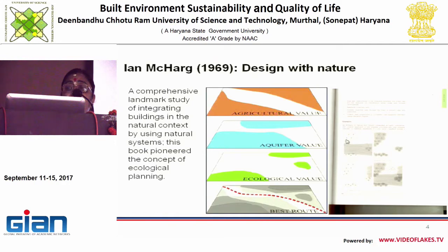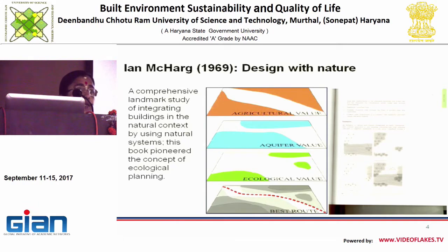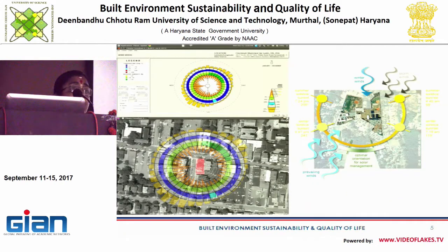McHarg said you should form layers of various aspects of the site. Topography forms one layer, vegetation forms another layer, water bodies form another, and all these layers can then be superimposed on each other to understand the potentials of the site. This is a very systematic process of analyzing. You should form layers of different attributes of the site and then superimpose them, because if you put everything together at once you may not be able to do a proper SWOT analysis.